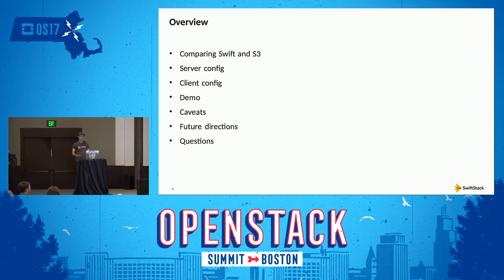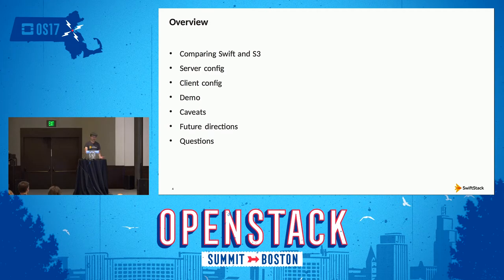So we're going to look at the comparison between Swift and S3. We'll look at an example server config to enable it, client config in particular for AWS's own client and Boto3. We'll have a nice little demo, I'll cover a few caveats around using Swift 3 — because you know there have to be a few catches — and finally I'll try to close with some future directions for what I want to do next.